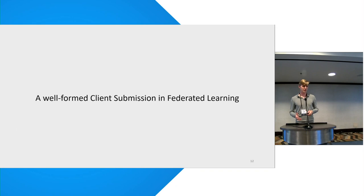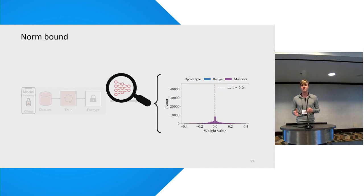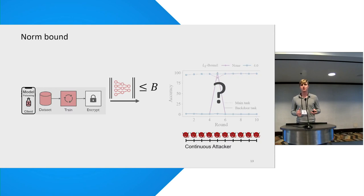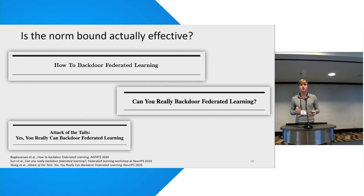What does a well-formed submission in federated learning look like? Because these attacks rely on scaling, if you look at the updates of malicious clients they are clearly much larger than updates of benign clients. So a natural question is: can we prevent these scaling attacks by simply enforcing a bound on the norm of clients' updates? And indeed for single-shot attacks, we see that norm bounds can be effective. But for stronger attacks it remains unclear whether the norm bound is effective, and this has been debated in recent work with different results.